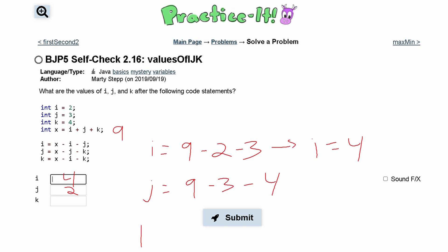Lastly we have K is equal to X which is 9 minus I which is 4, and then it is also minus K which is 4 as well. So we have K is equal to 1.